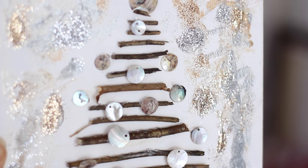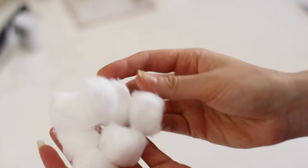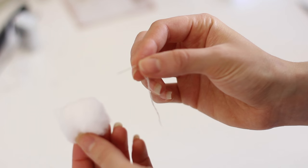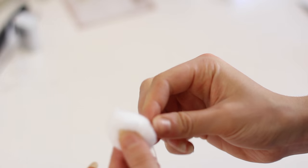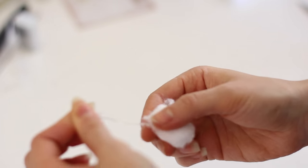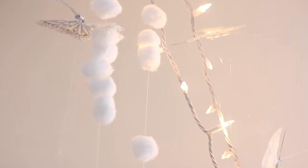Now this next DIY you're just going to need some thread, needles, and a bag of cotton balls and you're going to thread the cotton balls onto the thread. You can stagger them and do as many as you want but this is just so that I can make a really cool garland that is hanging in my bedroom and it just looks really cool and looks like snowballs.